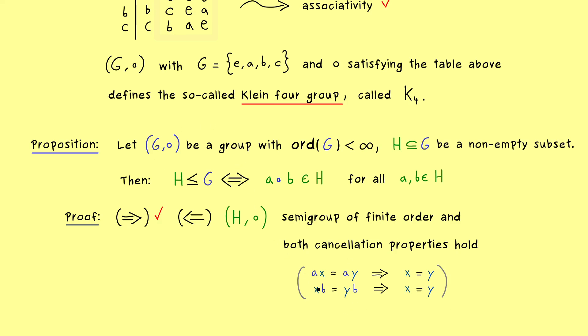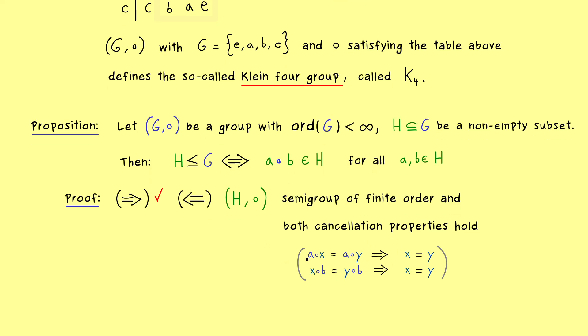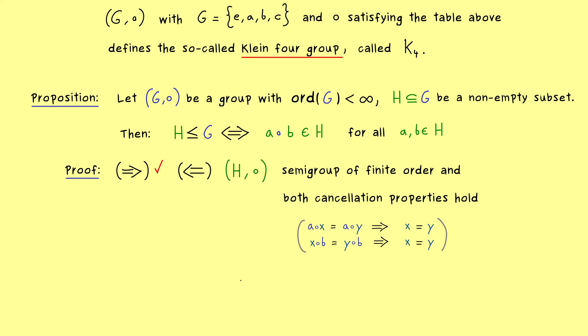So as a reminder, in a group we always have that we can cancel an element from the left-hand side or from the right-hand side. Therefore, we definitely have these two implications here inside the group G. But now we can simply choose A, X, Y, and B from the set H. However, these elements still live in our set G, so these implications are still correct. In conclusion, our semi-group H also has both cancellation properties. And now we can use what we have learned in part 6: namely, that the cancellation properties already define a group. But please don't forget, this only works if we have a semi-group of finite order. So part 6 is applicable here, and we get that H is a group. And with that, the whole proof is finished.